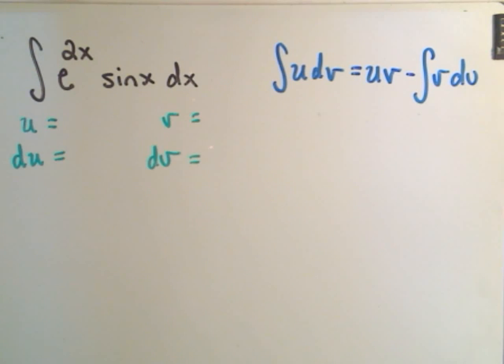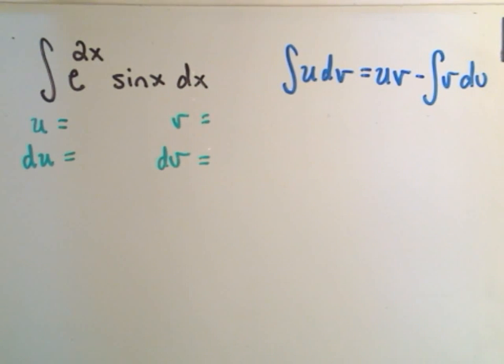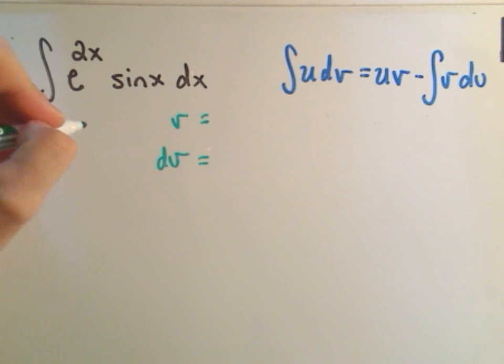There's a couple little rules on how you pick your u. A lot of times I pick u to be the thing that when I take the derivative of it, it becomes more simple. Well, if I take the derivative of e to the 2x, I'm going to have to use the chain rule. I'll get e to the 2x times 2. That doesn't really seem much better. Likewise, if I let u equal sine x, I just get cosine x. Again, that doesn't seem much better. But we'll have faith and see what happens.